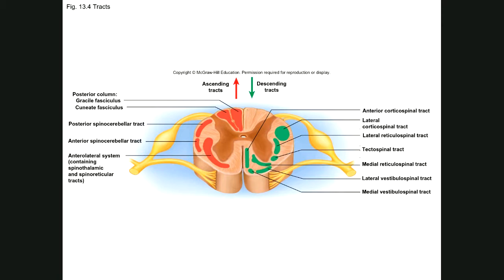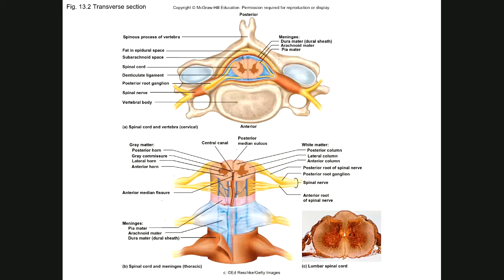Now looking at the gray matter — it's found deeper, underneath the white matter. If you look at the gray matter in the spinal cord, it has a typical shape. What typical shape would you describe it as? A butterfly — or some students say it looks like the bat signal. This is a very typical shape for the gray matter.